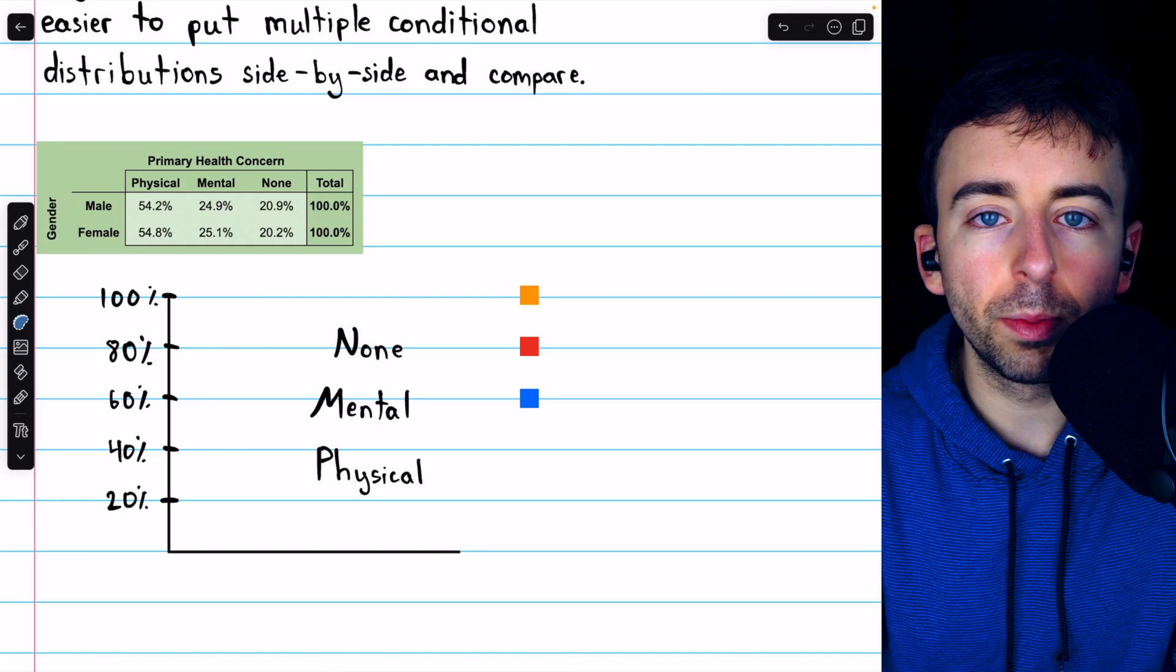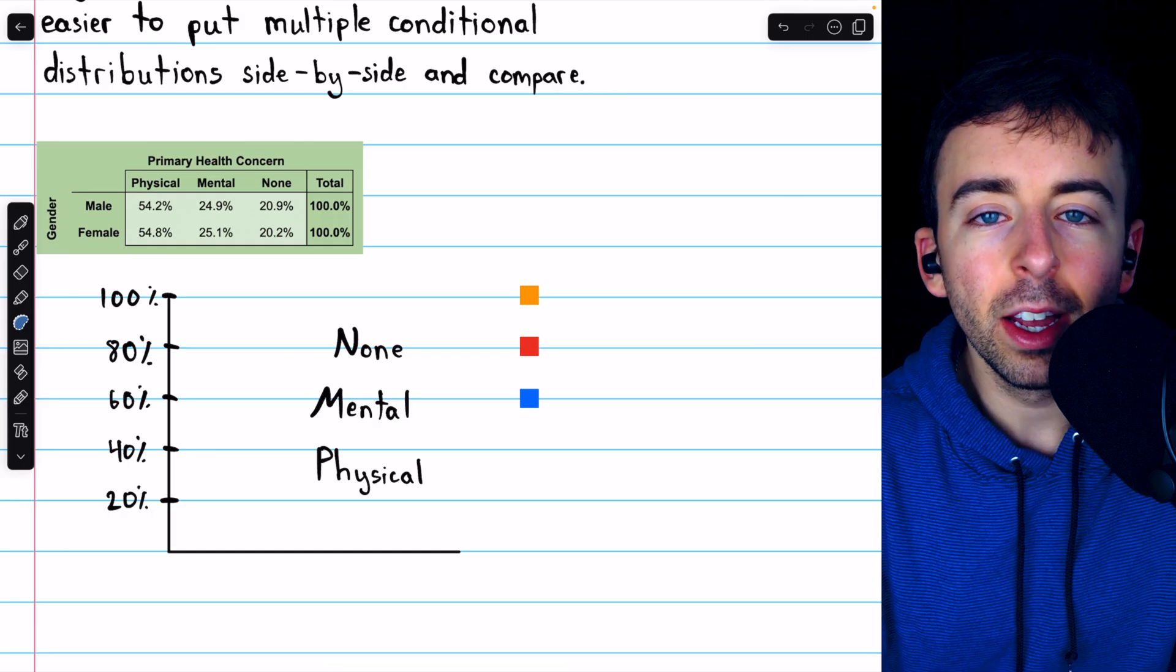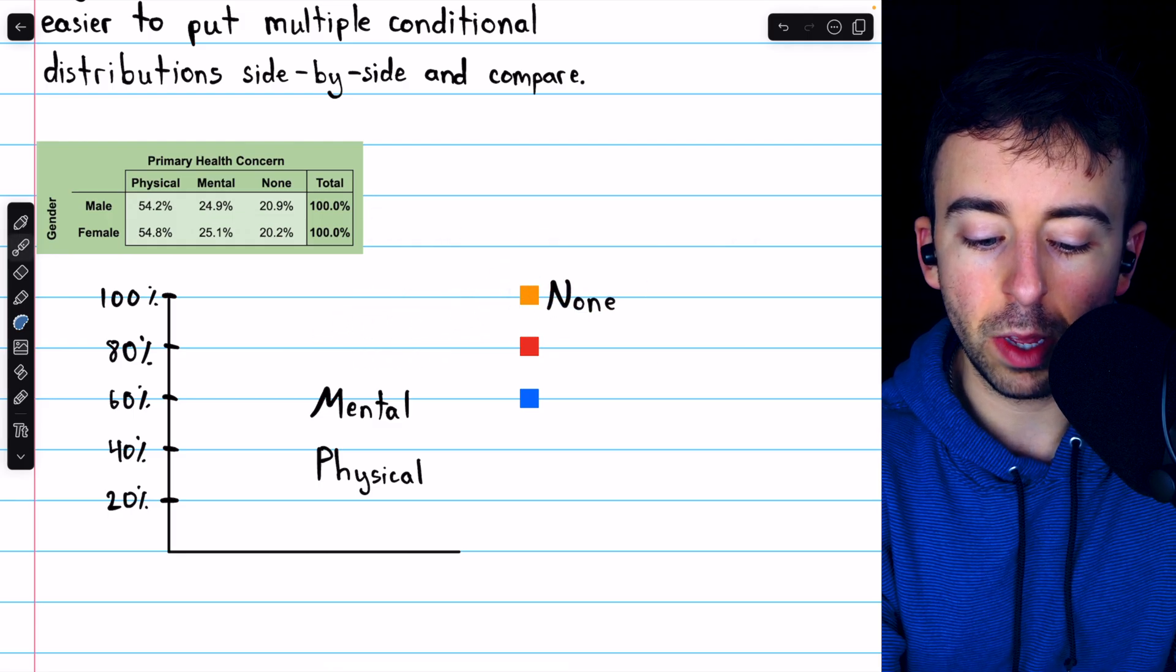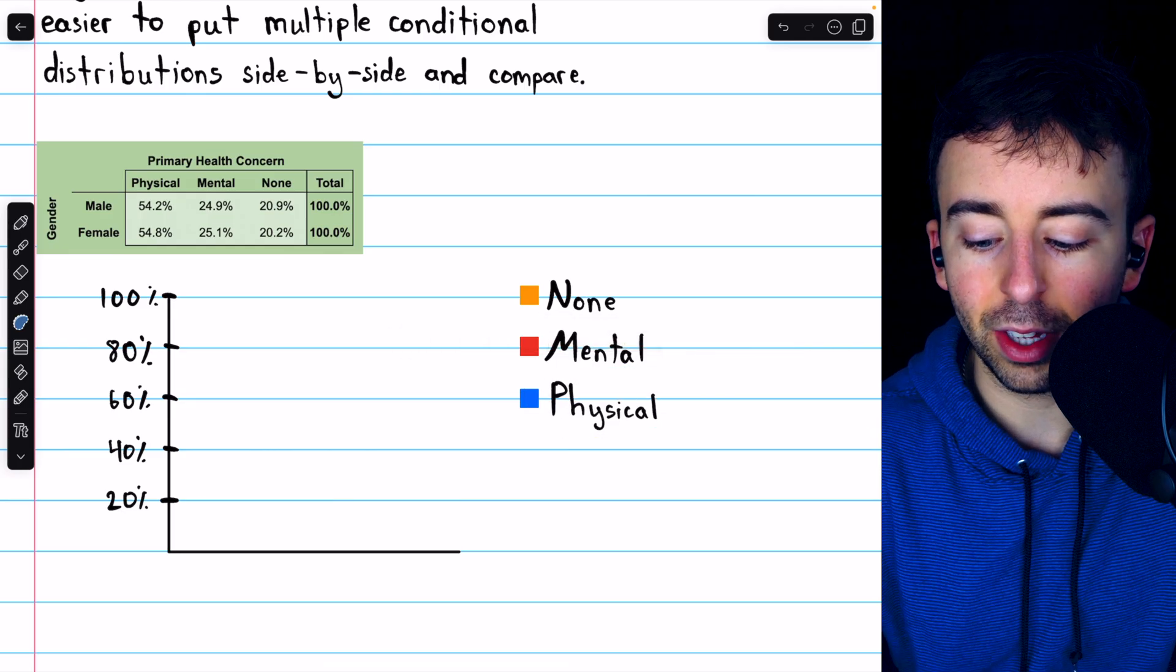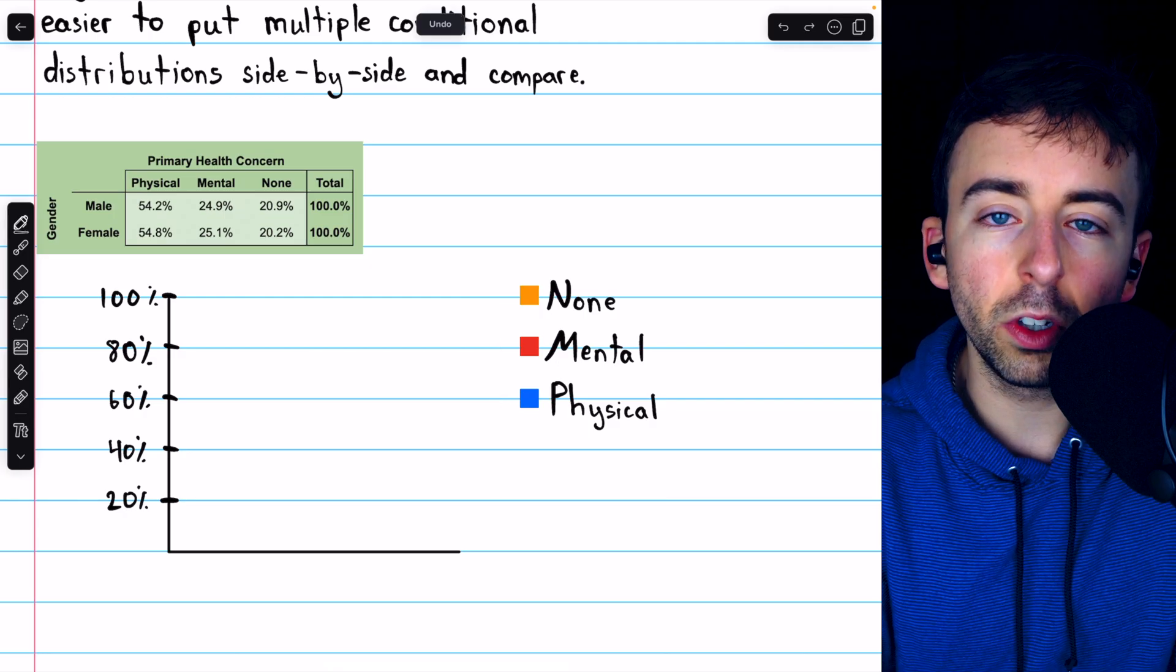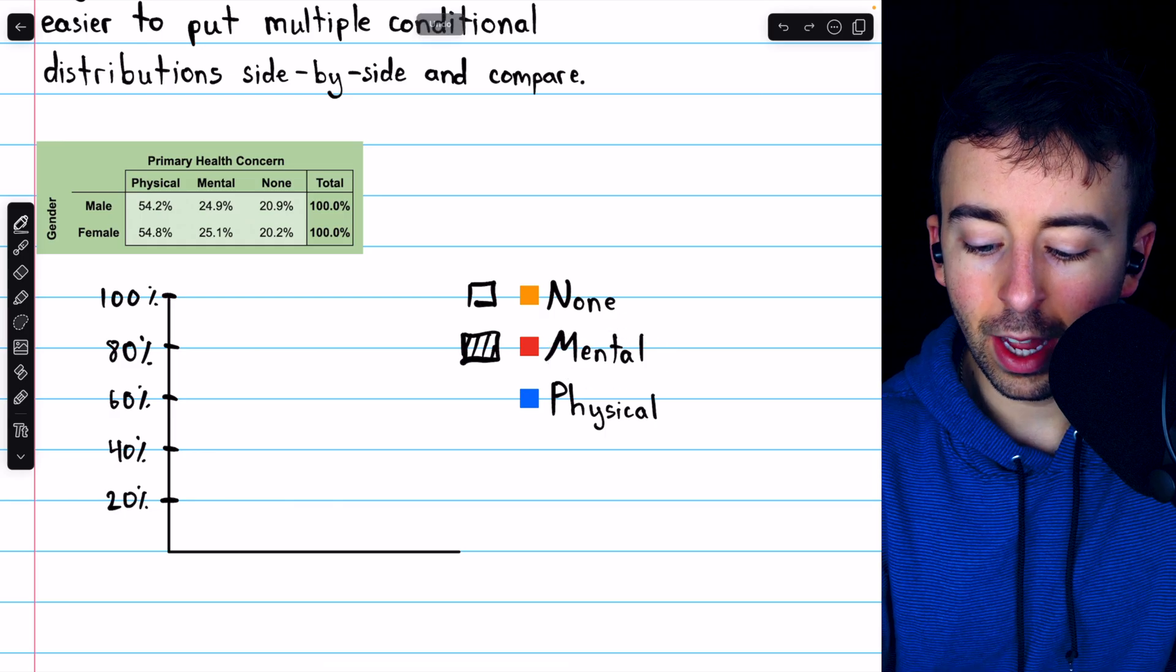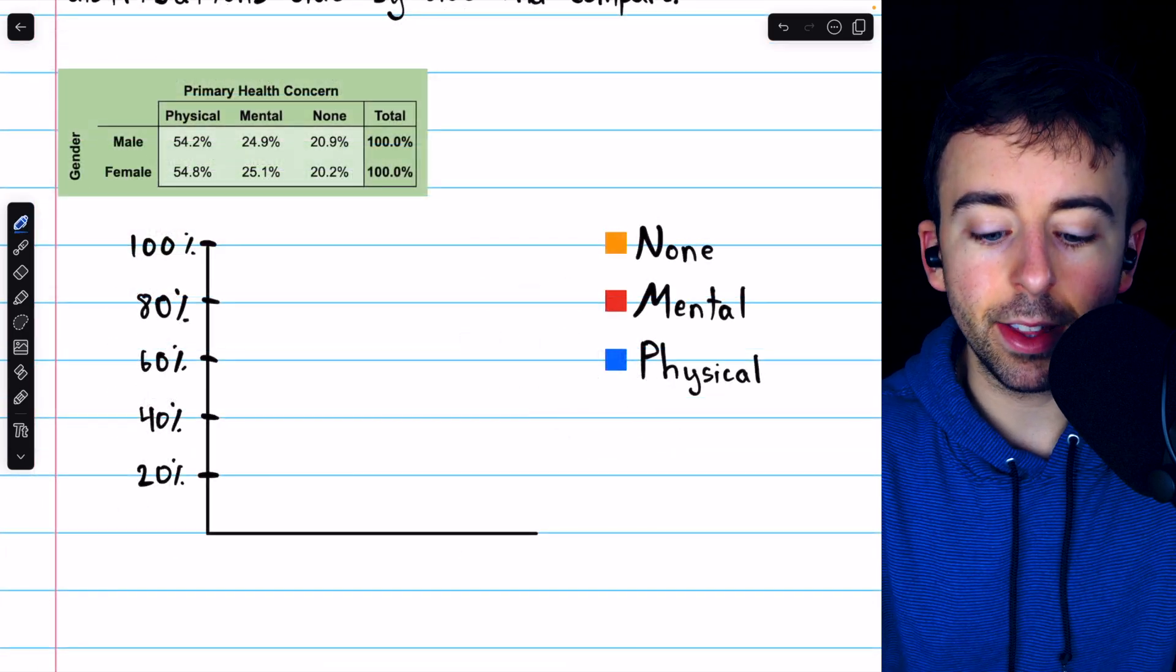Now, just like we use color to distinguish between the slices in a pie chart, we'll want to use color to distinguish between the segments in a segmented bar chart. So before we start constructing the bars, we want to make sure we've decided on those colors. We'll say that the orange segments represent the percentage of people who say they have no primary health concerns. Red represents mental health concerns and blue represents physical health concerns. Of course, if you were just doing this with a pencil, instead of using colors, you could use shading patterns. You could say no shading at all represents none, a diagonal shading pattern represents mental, and a dotted or speckled shaded pattern represents physical.